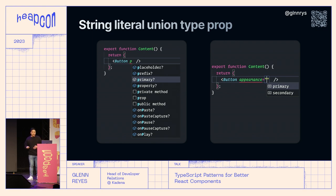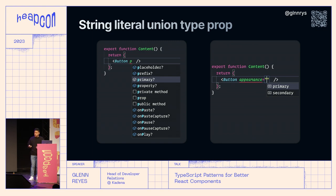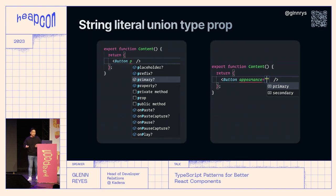If you compare these two approaches in your editor and pull up auto-suggestions, you'll quickly notice that using string literals is less cluttered than if you try to auto-suggest with all your Boolean props.